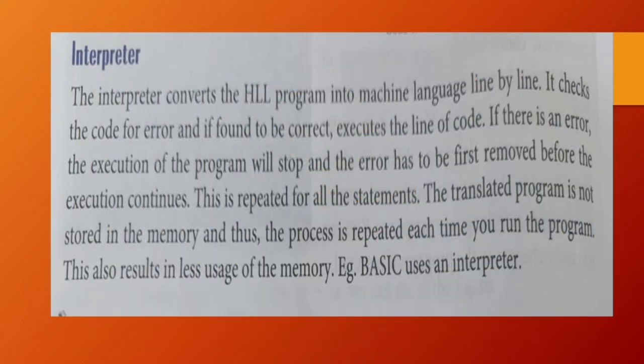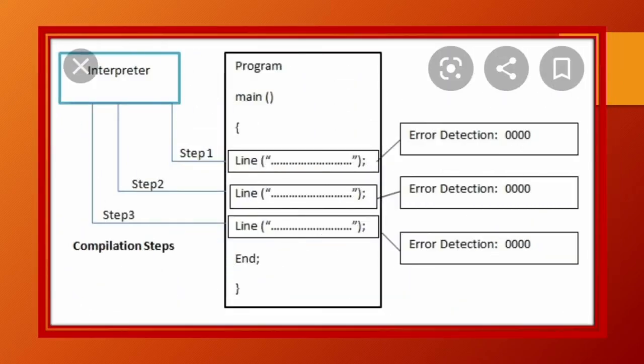Interpreter. The interpreter converts high-level language program to machine language line by line. It checks the code for errors and if found to be correct executes the line of code. If there is an error, the execution of the program will stop and the error has to be first removed before the execution continues. This is repeated for all the statements. Means, interpreter program ko line by line check karta hai. Agar kisi bhi line mein koi mistake hoti hai toh uske bare me pata lagata hai aur uske pehle correction ki jati hai. Uske baad next line ko check karta hai. The translated program is not stored in memory and thus the process is repeated each time you run the program. This also results in less usage of memory. Example, basic uses an interpreter.